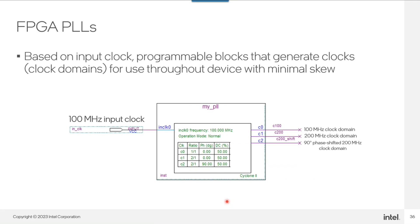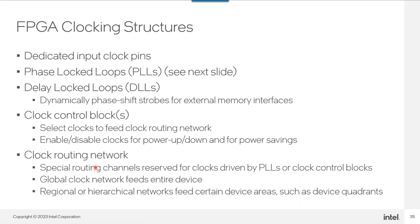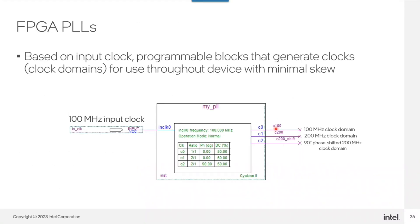A PLL takes a reference clock and creates additional clock domains distributed throughout the device. For example, a 100 MHz input clock from a crystal or oscillator can be programmed in the PLL to generate: a mirrored 100 MHz clock, a 200 MHz clock (multiply by 2), and a 200 MHz phase-shifted clock. The PLL includes compensation features to account for clock delay through the PLL itself and through the clock routing networks, automatically phase-shifting output clocks to allow the design to run faster without clock delay affecting operation.